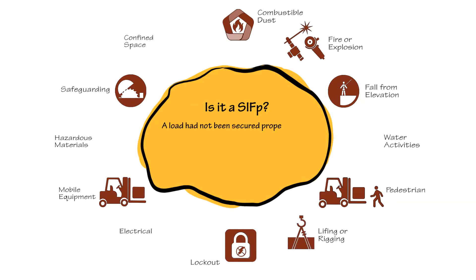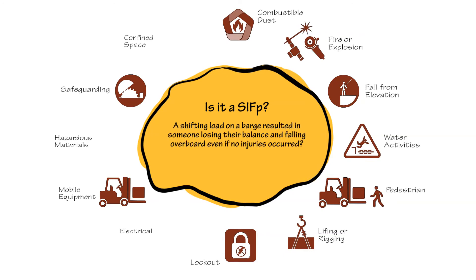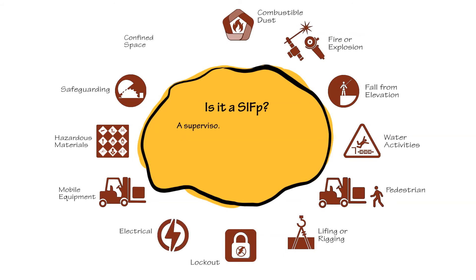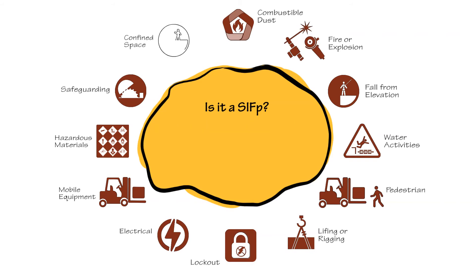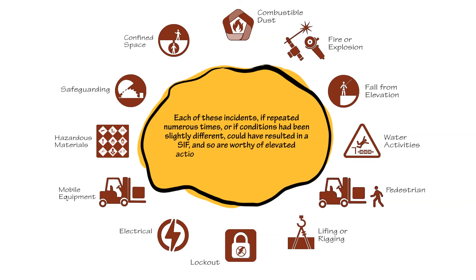Would it be a SIFP if a small fire occurred even though someone extinguished it before it got out of hand? What about a load that hadn't been secured properly when lifting with a crane, and the load dropped locally without anyone in the way? Is it a SIFP if a shifting load on a barge resulted in someone losing their balance and falling overboard, even if no injuries occurred? Would it be a SIFP if when moving a hazardous chemical the liquid splashes but doesn't get on anyone? What if a supervisor saw a worker touch a circuit before testing if it was live, even though it wasn't live? Is it a SIFP if a worker enters a confined space temporarily to retrieve a tool without a permit? Each of these incidents, if repeated numerous times or if conditions had been slightly different, could have resulted in a SIF and so are worthy of elevated actions beyond standard investigations.